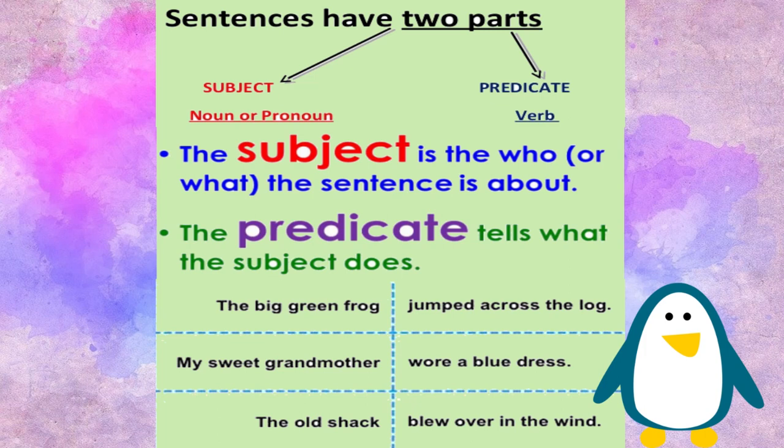My sweet grandmother wore a blue dress. My sweet grandmother is the subject. Wore a blue dress is the predicate.